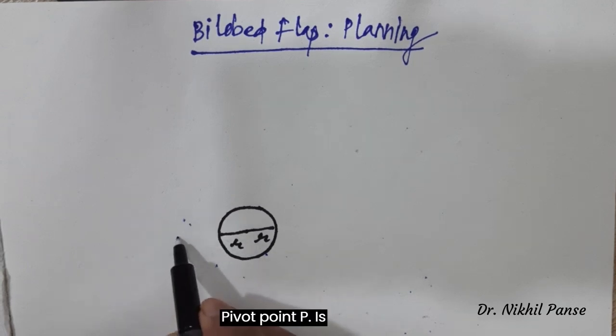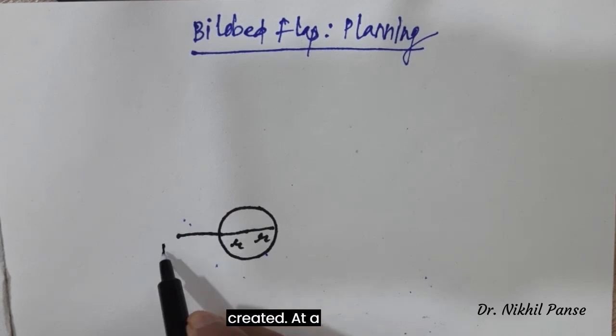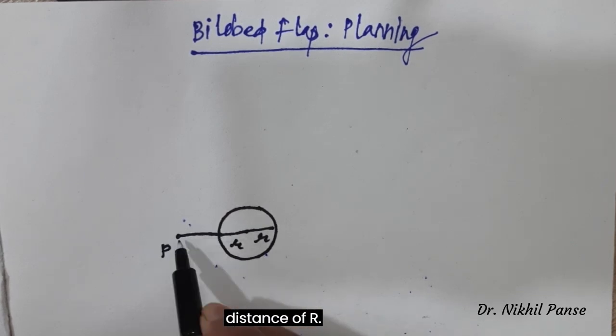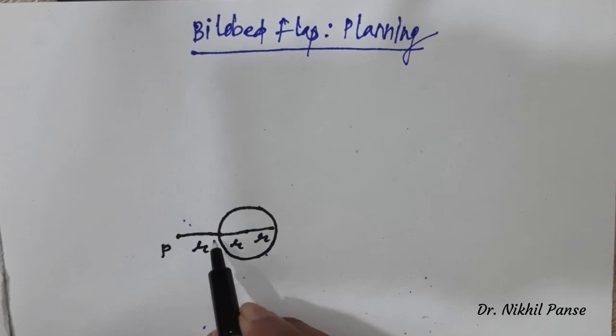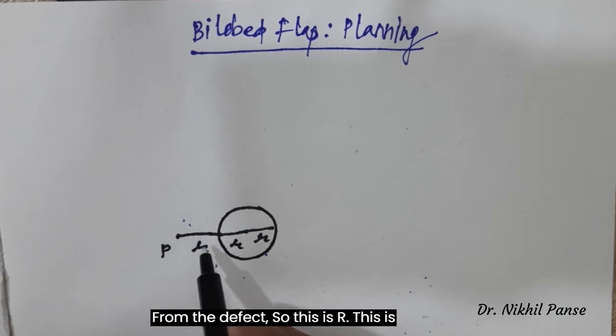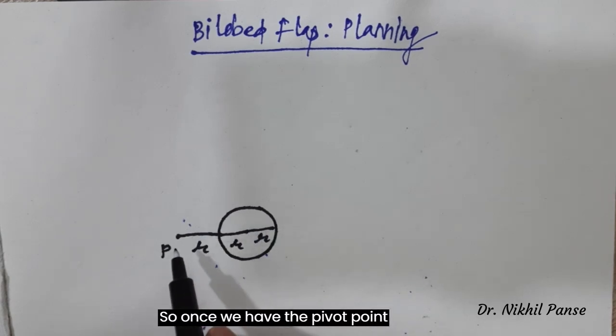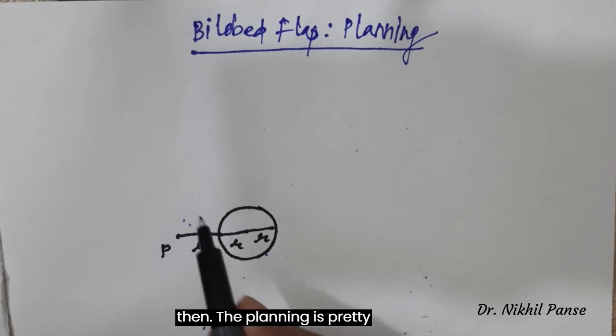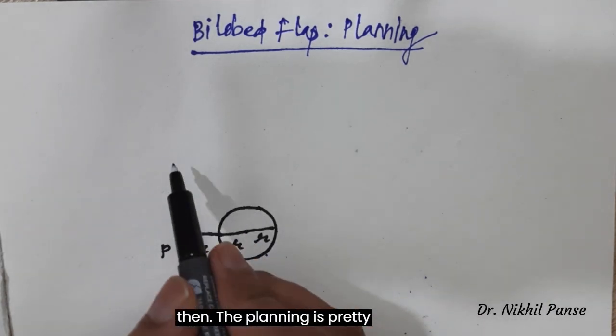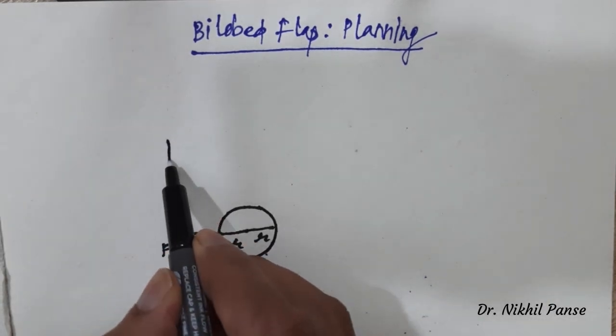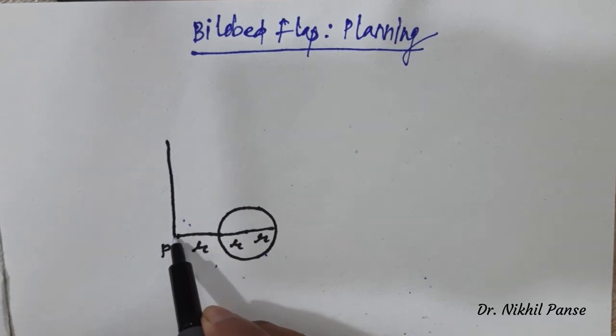Pivot point P is created at a distance of R from the defect. So this is R, this is also R, and this is also R. Once we have the pivot point, then the planning is pretty straightforward.